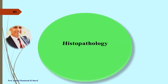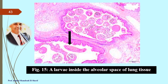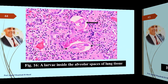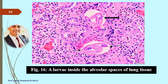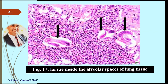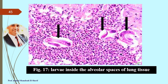Pathological changes: microscopic pictures show alveolar spaces of lung tissue of a diseased calf with larvae inside; black arrows denote the worms. Larvae are visible inside the alveolar spaces of lung tissue. Dead animals due to verminous bronchitis are also presented.